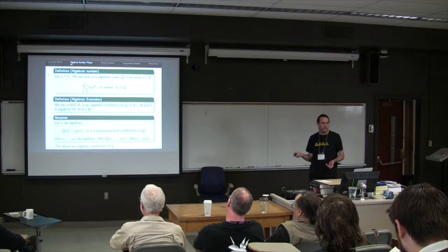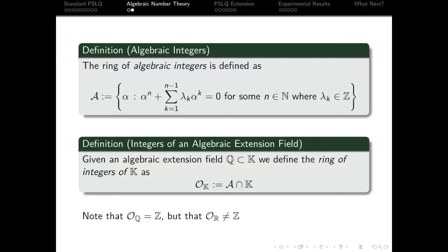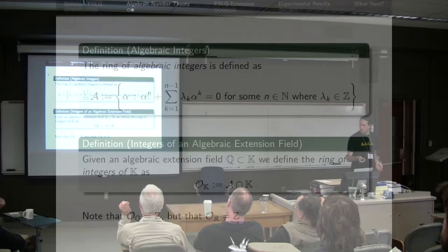Okay, so our algebraic integers are defined as the collection of all numbers which are the zero of some monic polynomial with coefficients in the integers. And then if we have an algebraic extension field we can talk about its ring of integers as just being the intersection of the collection of all algebraic integers with the field.